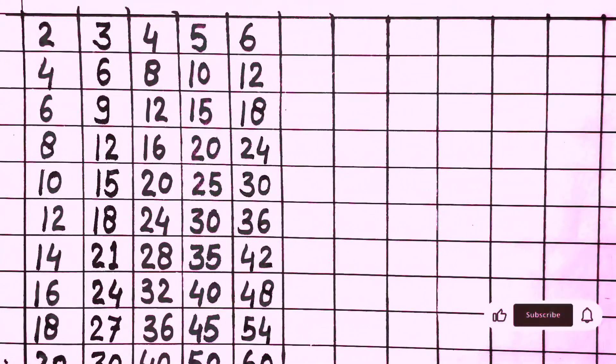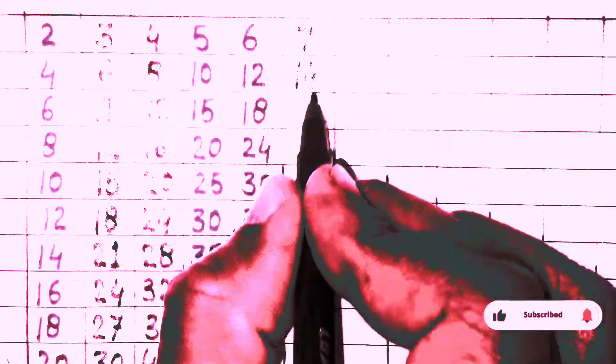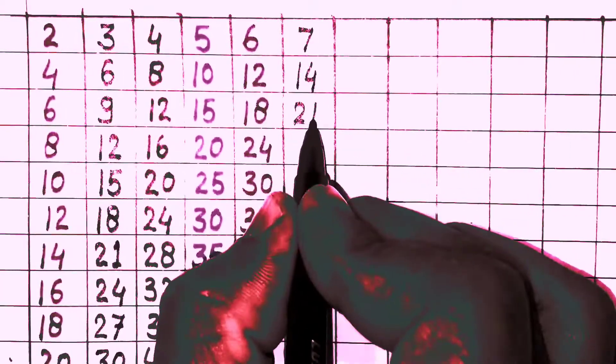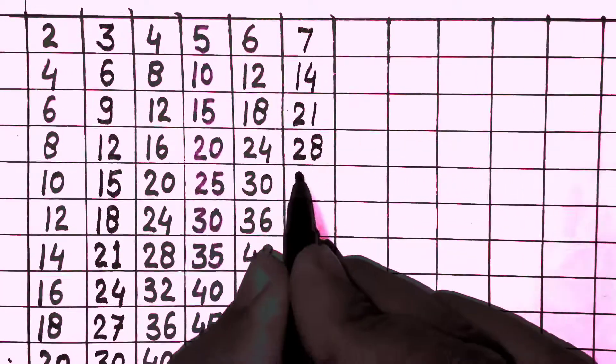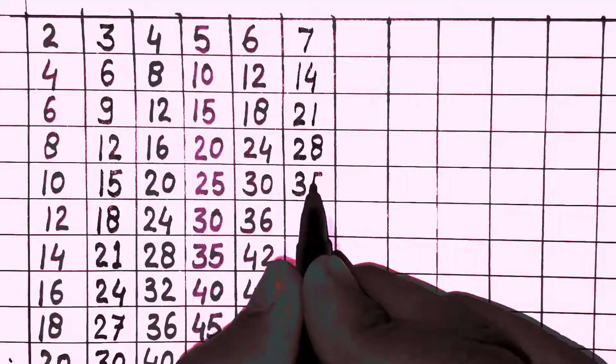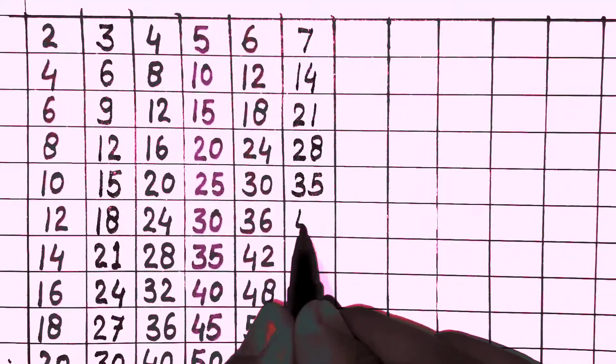7 times 1 is 7, 7 times 2 is 14, 7 times 3 is 21, 7 times 4 is 28, 7 times 5 is 35.